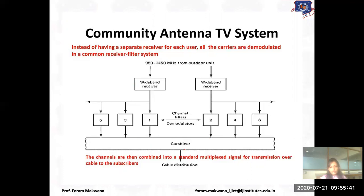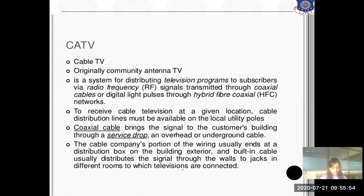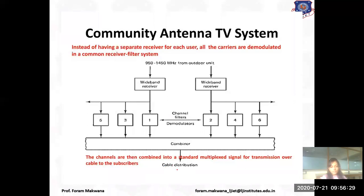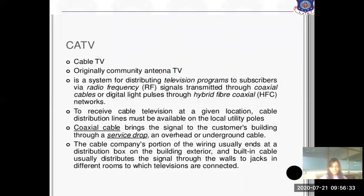CATV stands for cable TV or community antenna TV system. It is a system for distributing television programs to subscribers via RF signals transmitted through coaxial cable. The combined channels are distributed via cable to specific users. To receive cable television at a given location, cable distribution lines must be available. The coaxial cable brings the signal to the customer's building through a service drop or underground cable.